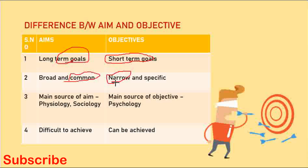The main source of aim is philosophy and sociology — they are the main sources of aim. But for objective, the main source is psychology. Our educational objectives follow that path — for example, the cognitive domain deals with the psychology of a person.